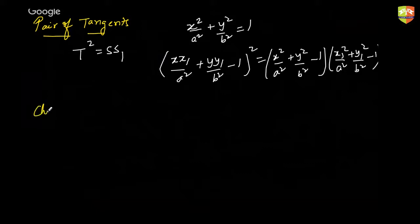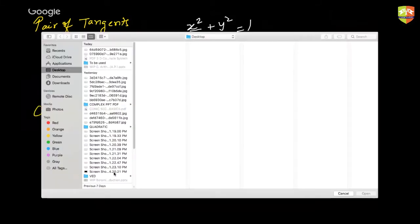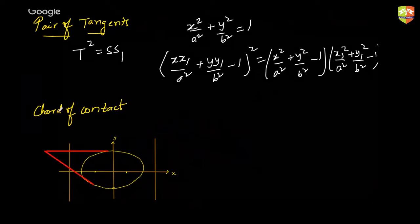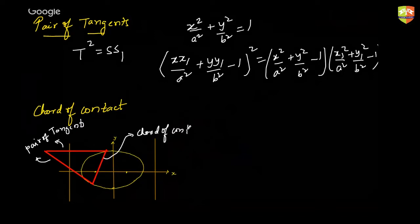Moving on to chord of contact — let me draw a diagram so that all of you can make sense. These are the pair of tangents, and the line connecting the points of contact is called the chord of contact. The chord of contact equation is again T = 0.